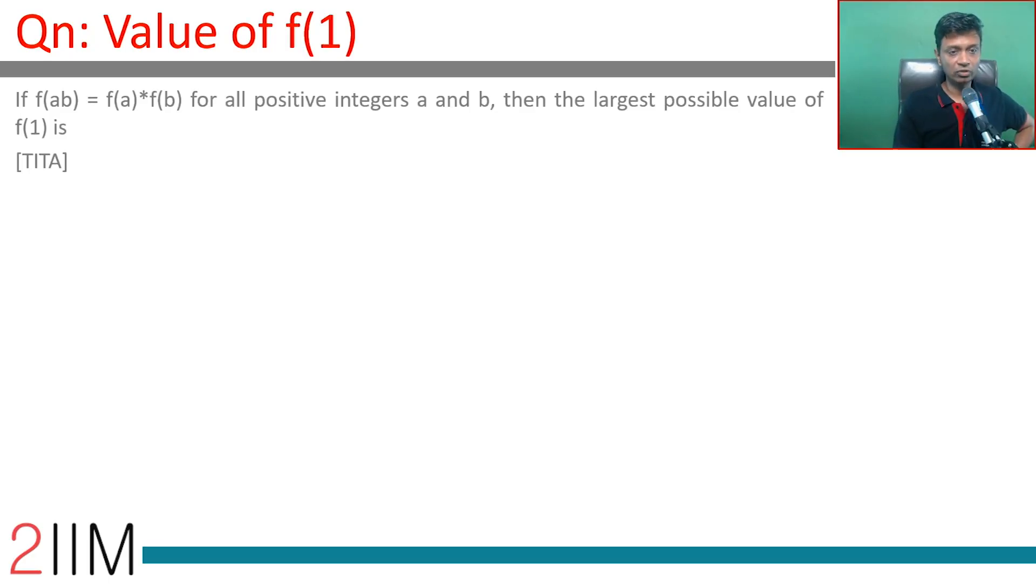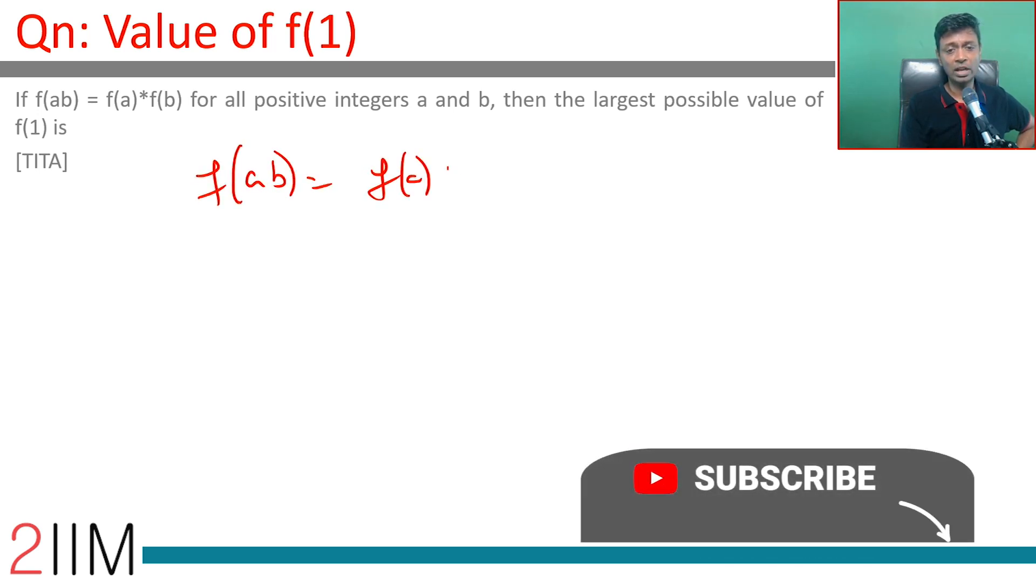f of a comma b is f of a into f of b for all positive integers a and b. Then the largest possible value of f of 1? See, f of a into b is f of a into f of b.